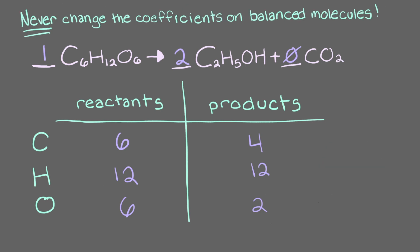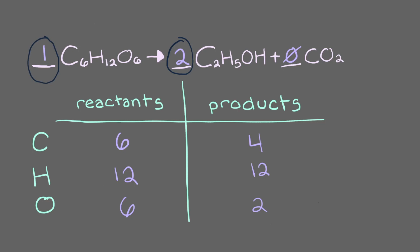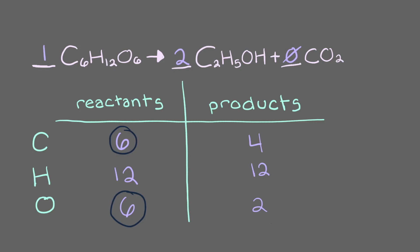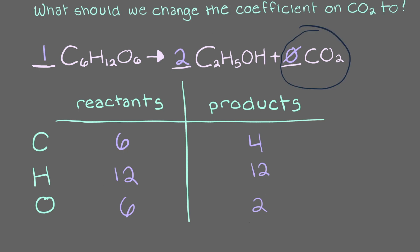Remember, we never change the coefficients on molecules we've already balanced. Because we already have positive integer coefficients on C2H5OH and C6H12O6, we have to change the coefficient on CO2. How many total carbon and oxygen atoms do we need on the product side of the equation? Right! We need 6 carbon atoms and 6 oxygen atoms. However, let's take a quick look at our table. We already have 4 carbon atoms and 2 oxygen atoms on the product side, since we balanced C2H5OH first. So, since we already have some existing carbon and oxygen atoms on the product side, what should we change the coefficient on CO2 to?